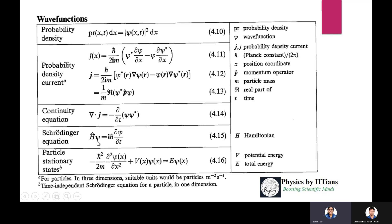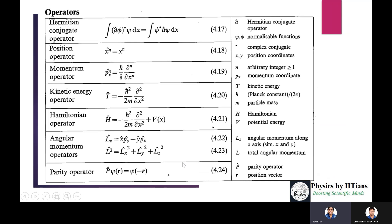For a particle in stationary states, kinetic energy plus potential energy equals total energy E. The Hamiltonian: the kinetic energy operator is minus h-bar squared over 2m times del^2/del-x^2, plus V(x) as the potential operator. Acting on psi, this gives E times psi.